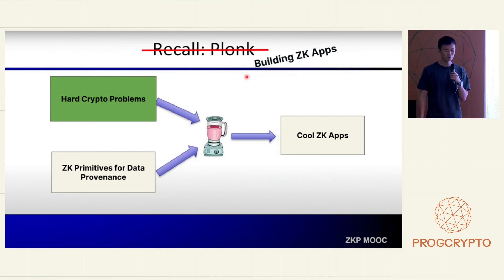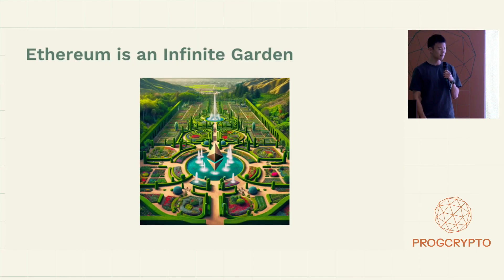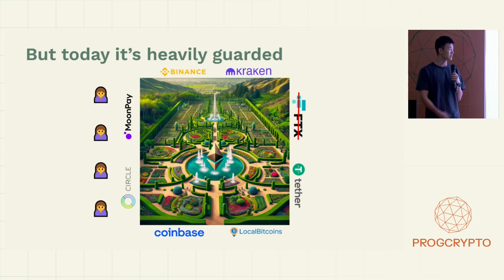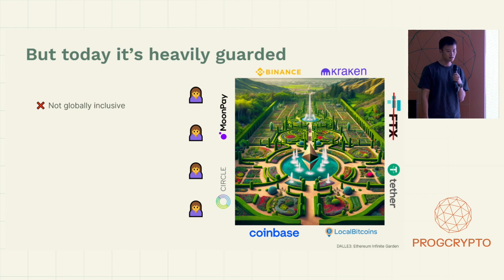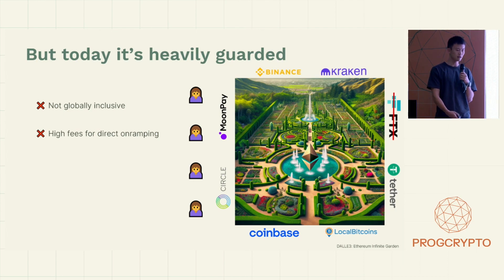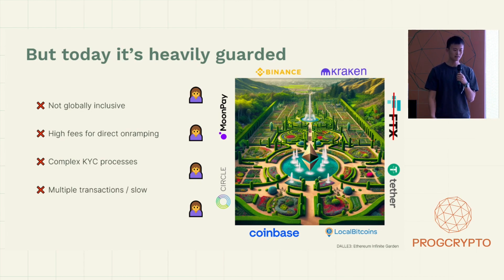We'll talk a little bit about hard crypto problems. As people might be familiar here, we like to say that Ethereum is an infinite garden, but the problem today is it's heavily guarded. It's really difficult to get inside because you have to get past some of these trusted intermediaries in order to bring your assets onto Ethereum. To on-ramp crypto today, the problems are it's not globally inclusive, there's high fees for direct on-ramping charging up to 5%, there's complex KYC processes, multiple transactions, sources of delays, and lastly it's not composable with the rest of DeFi or the rest of the ecosystem.